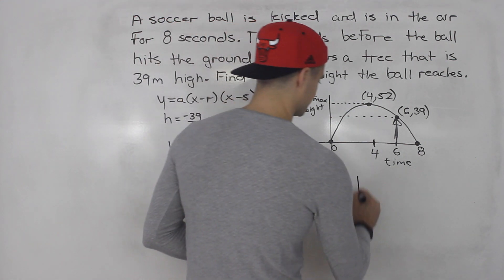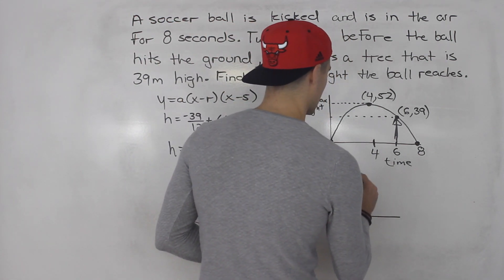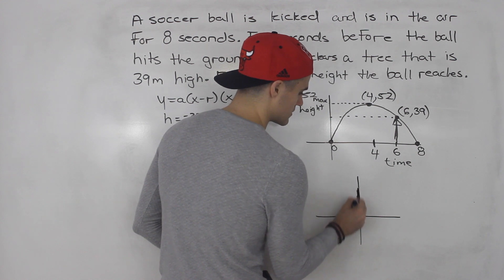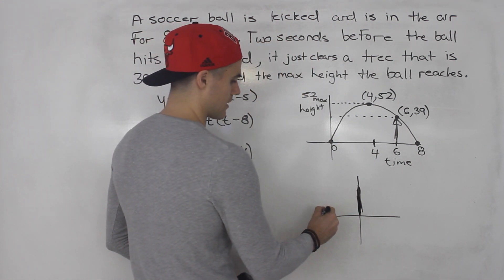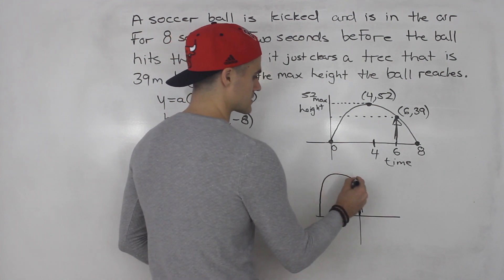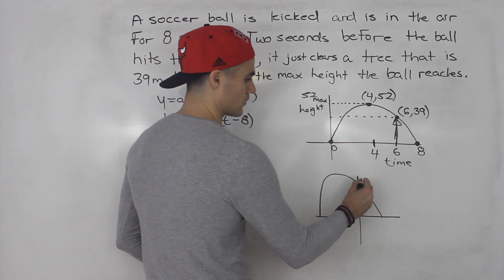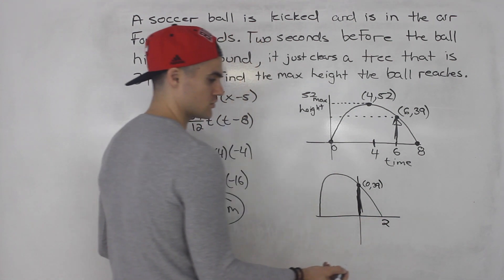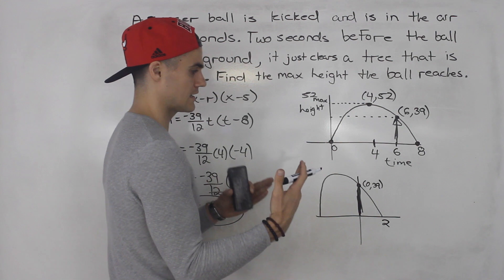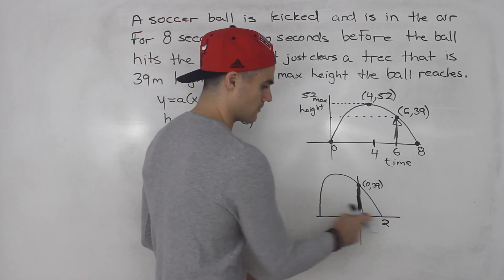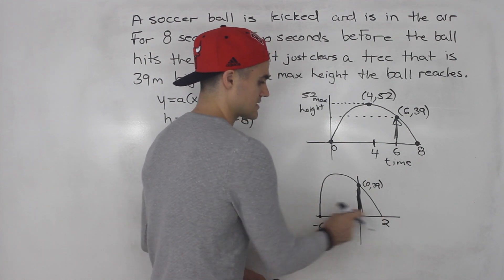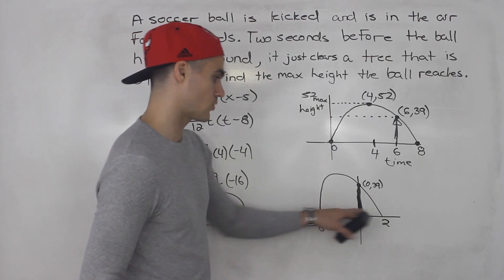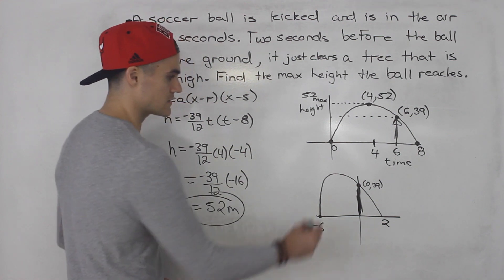Another way you can actually do this is you can pretend like the tree is happening on the y-axis. So let's say that the tree is there. Well, then your diagram is going to look something like this. Okay, and this coordinate here would be zero and 39. Two seconds before the ball hits the ground. So we know this intercept is going to be two. And we know that the ball is in the air in total eight seconds. So two minus eight would give us negative six here. So from negative six to two, that's a distance of eight, which is a total of eight seconds that the ball is in the air.